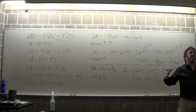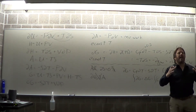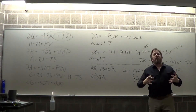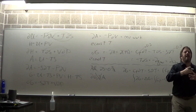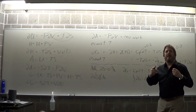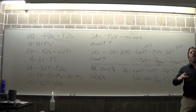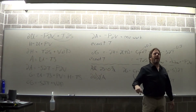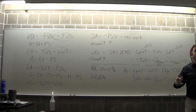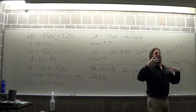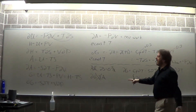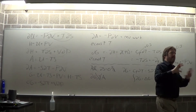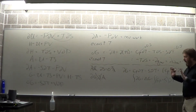These energy functions U, H, A, G are useful under certain conditions — always when their natural variables are held constant. Then they can tell you about heat (U and H) or work (A and G), or if both variables are held constant, they tell you about total entropy. A and G are not useful in adiabatic conditions because S is not their natural variable, so that information doesn't tell you anything.